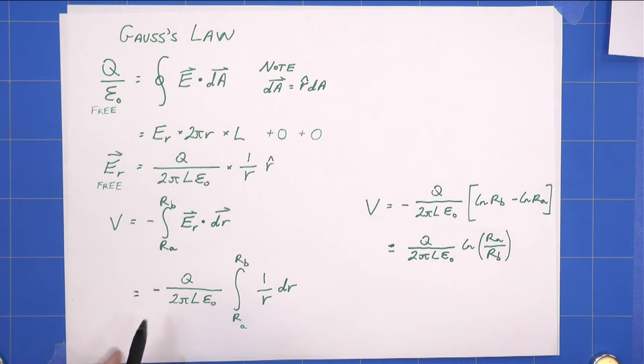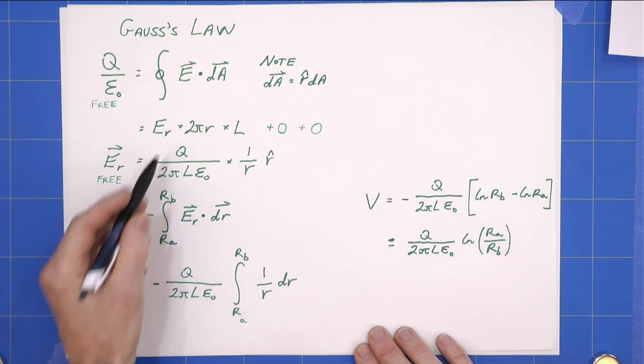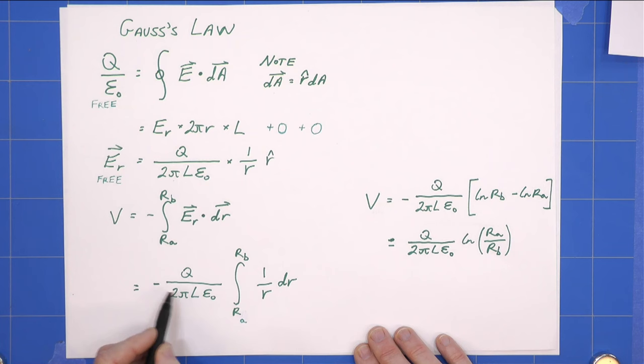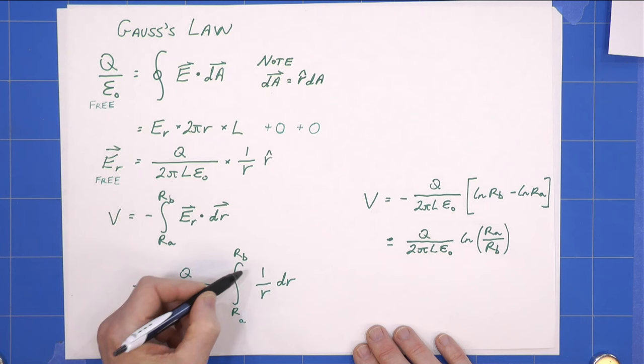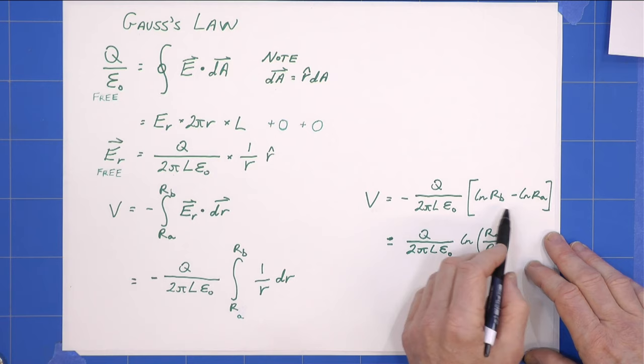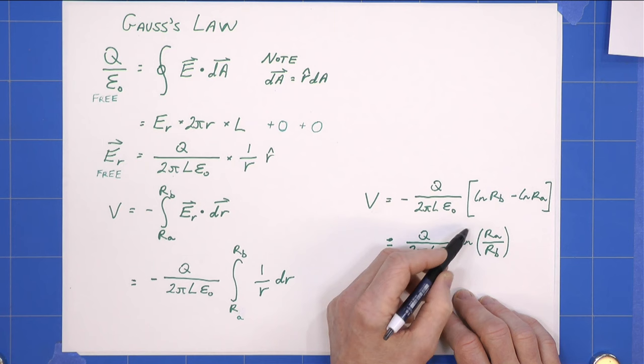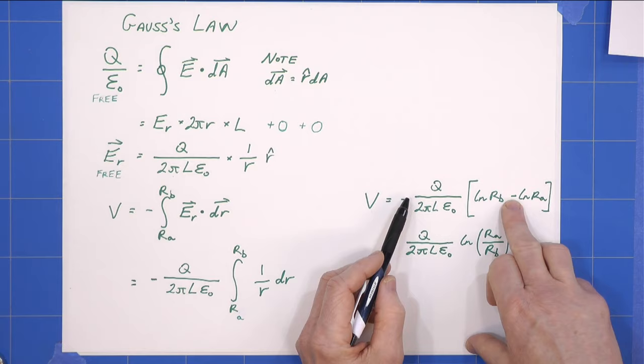Back to the calculations. We need to evaluate ER⋅dR from RA to RB, taking the minus as well into consideration. Plugging this in, we get V equals minus Q over 2π L ε₀, integral RA to RB, standard result which gives us natural log RB minus natural log RA. When we evaluate this, moving on, we get a potential equals Q over 2π L ε₀ natural log RA over RB. Note we've got our two minuses here, so take care with those.